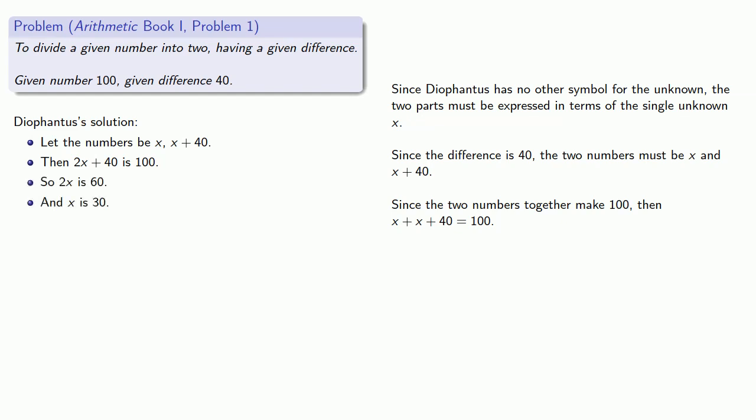Here's an important feature: the two numbers that we're looking for are x and x plus 40. We found x, but we haven't found the two numbers. So we're going to replace x in our expressions and get the required numbers 30 and 70.